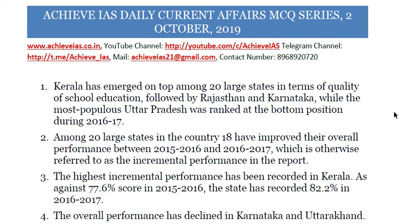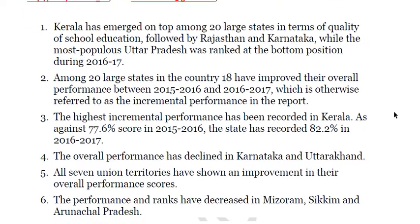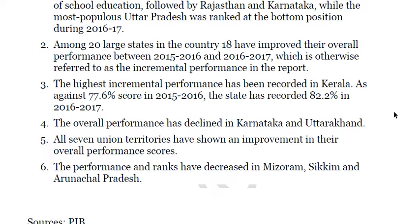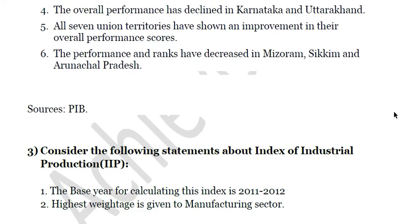Kerala emerged on top among 20 large states in terms of quality of school education, followed by Rajasthan and Karnataka, while Uttar Pradesh was ranked at the bottom during 2016-17. Among the 20 large states, 18 improved overall performance between 2015-16 and 2016-17 — referred to as incremental performance in the report. Highest incremental performance was recorded in Kerala: from 77.6% in 2015-16 to 82.2% in 2016-17. All seven UTs showed improvement; performance declined in Karnataka, Uttarakhand, Mizoram, Sikkim, and Arunachal Pradesh.